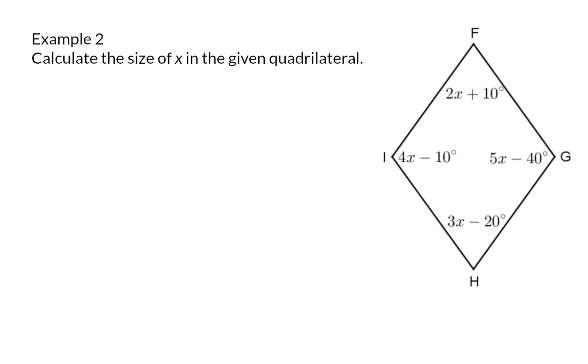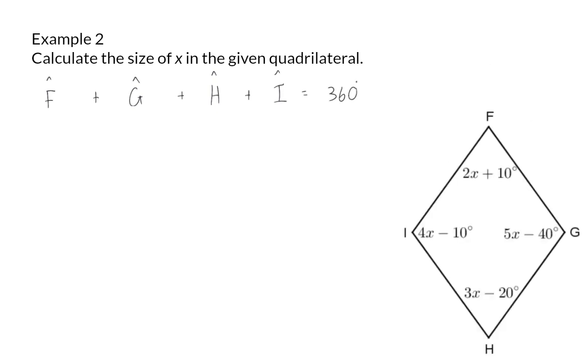we do know that the sum of the interior angles of any quadrilateral will be 360 degrees. So angle F plus angle G plus angle H plus angle I should give me 360 degrees. Angle F is 2X plus angle G is 5X minus 40,